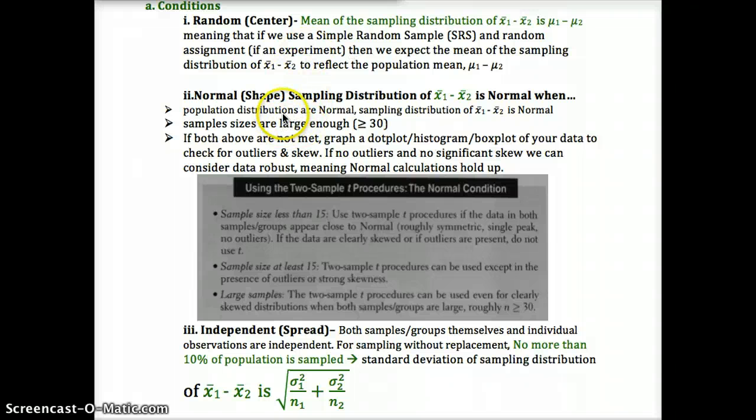The normal condition has to be met for both of the samples. Remember, if the population is normal, you're good to go. If not, look for the central limit theorem, which is that if sample sizes are large enough, n is greater than or equal to 30, only for sample means, not for sample proportions, then the normal condition is met, meaning our sampling distribution is approximately normal. If those two are not met, then you look to see if it's robust.